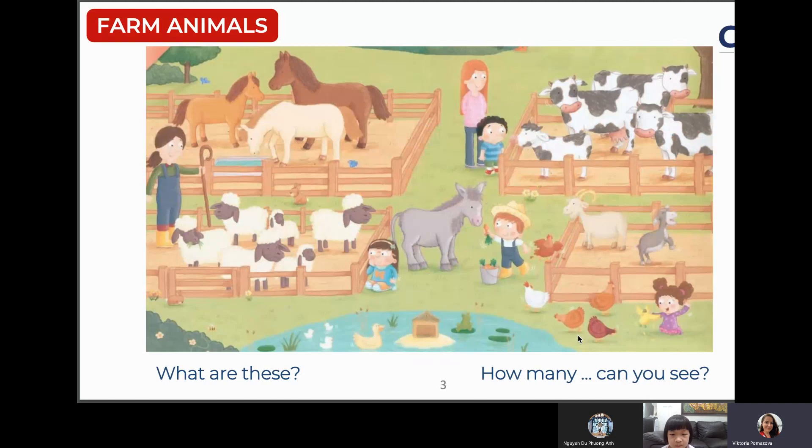And what are these animals? What do you see? I see a cow, a horse, a sheep, and a goat. I see cows, horses, and a chicken. Yes. Very good.